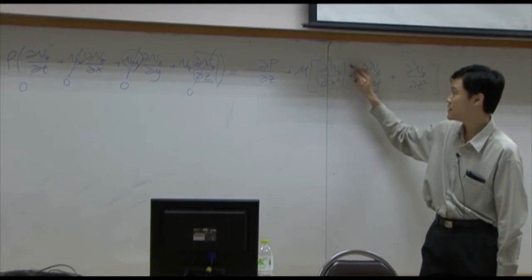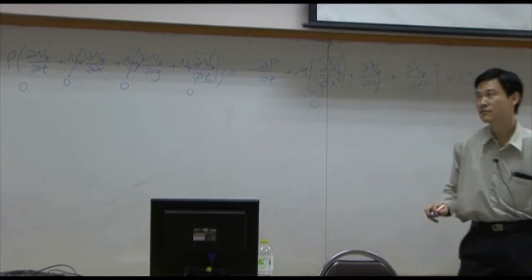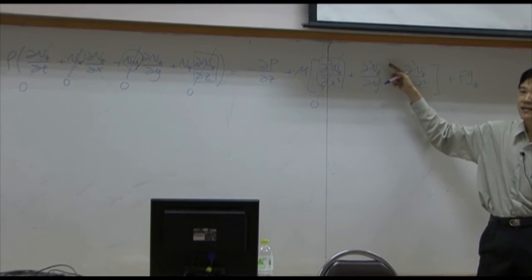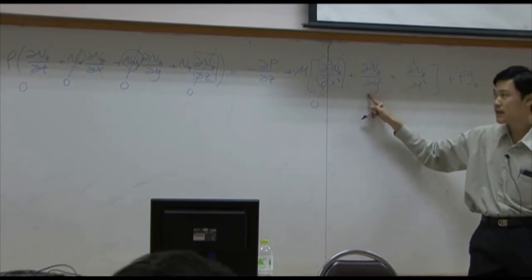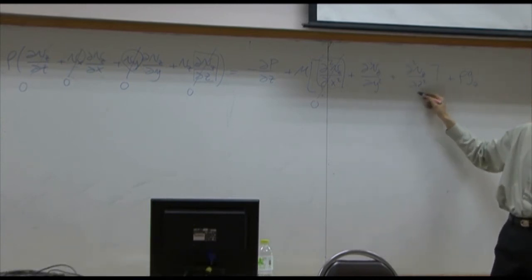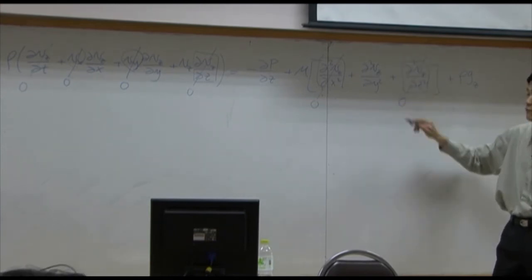Vc is zero. The whole thing here. Vc does not change with respect to x. It does change with respect to y. So this one must be kept. It does not change with respect to z. This one can be dropped.